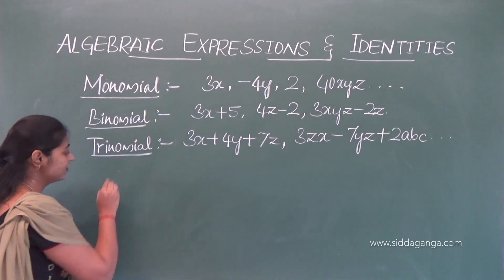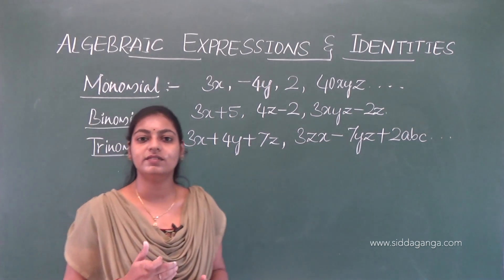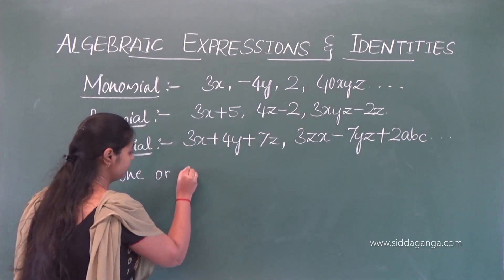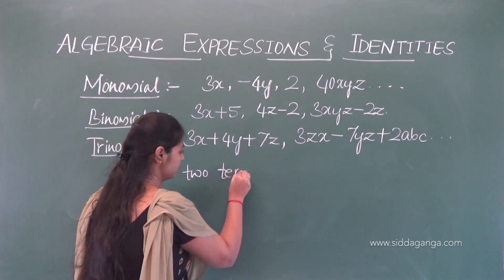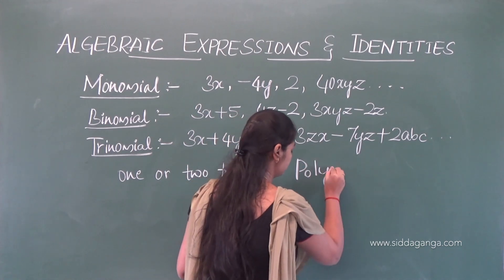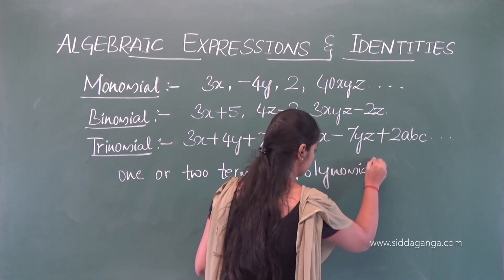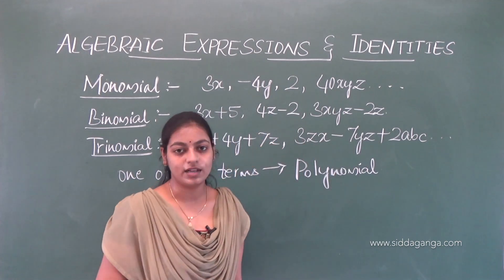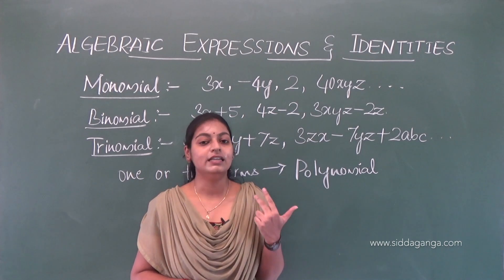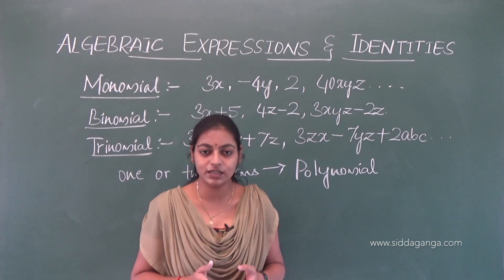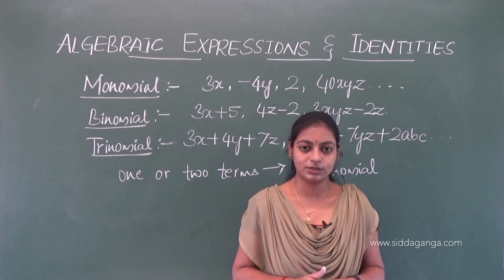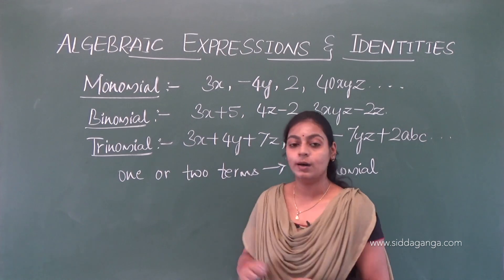Similarly, if an expression contains more than one or two terms, then we call it a polynomial. So if it contains two terms it is a binomial, if it contains three terms it is a trinomial, and more than that we call it a polynomial in general.